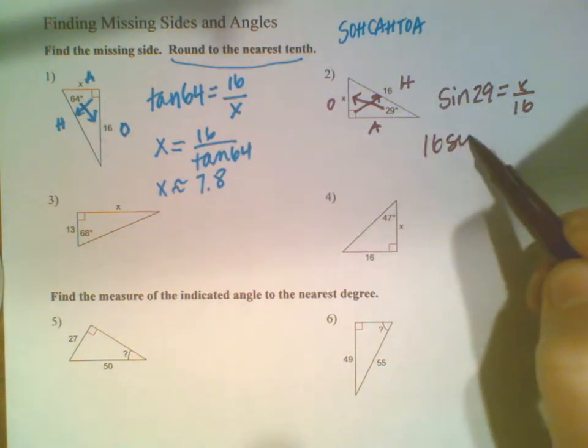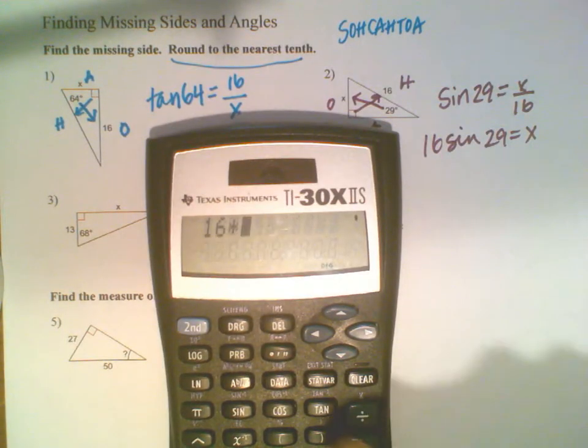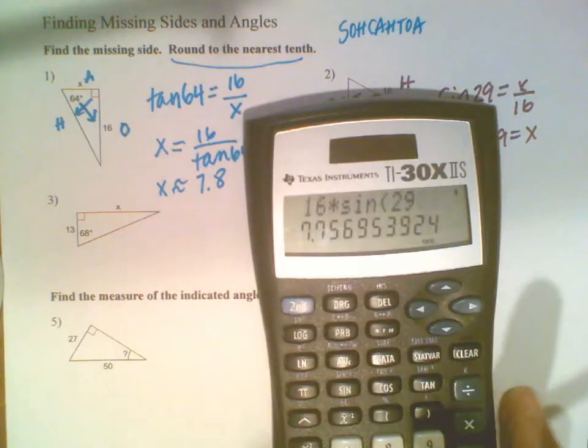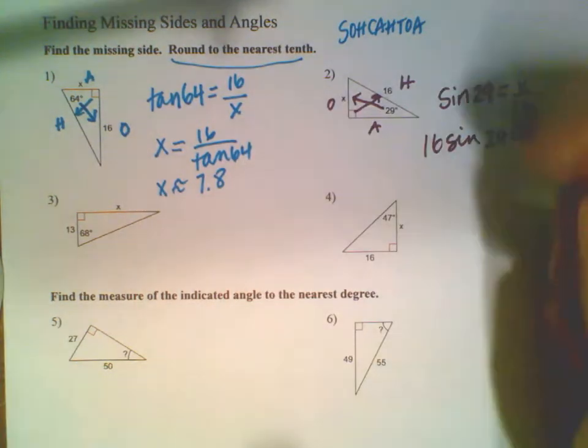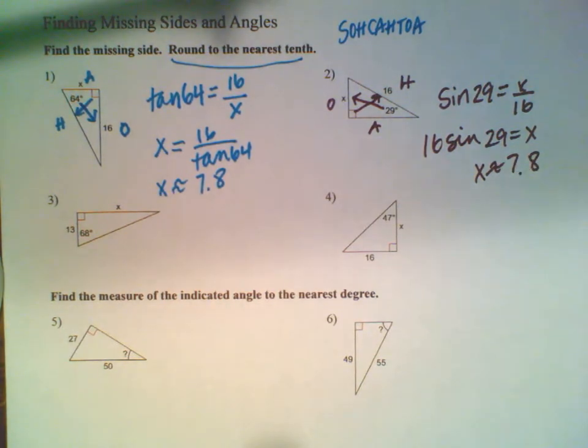Because X is on top I multiply. I end up doing 16 times the sine of 29 to get X. I take out my calculator: 16 times the sine of 29, and I get 7.8 ish again. X is about 7.8. If you have a calculator, it's really handy. If you don't, pull out your phone or use an option on your Chromebook to find a trig calculator.